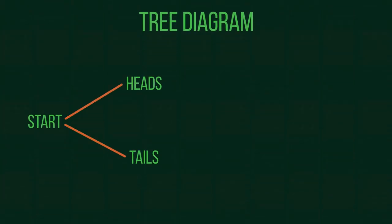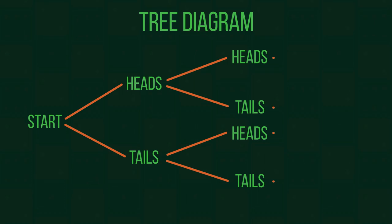In this video we're going to look at how to use a tree diagram. A tree diagram shows all the possible outcomes of more than one event by following the possible paths along the branches of a tree.